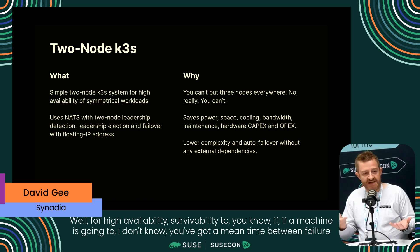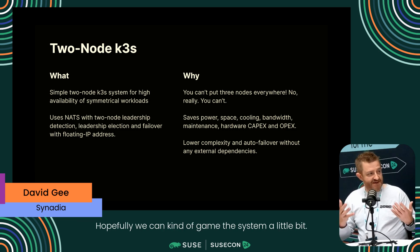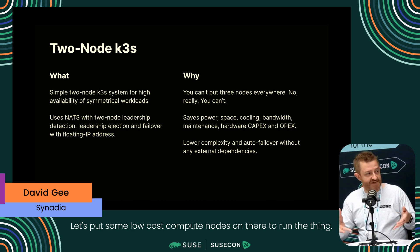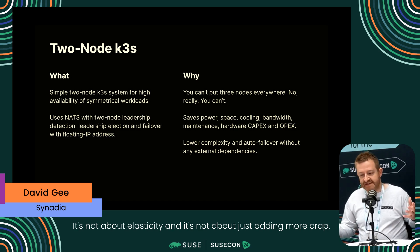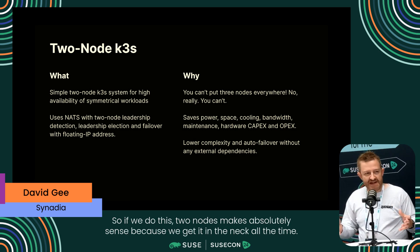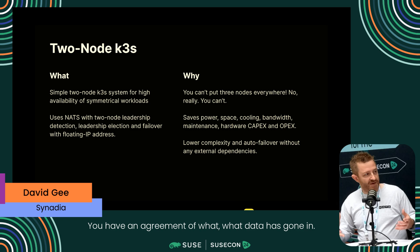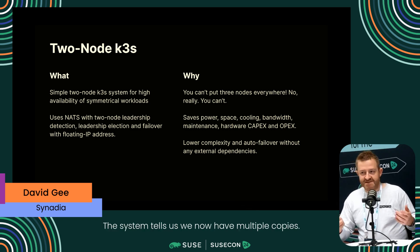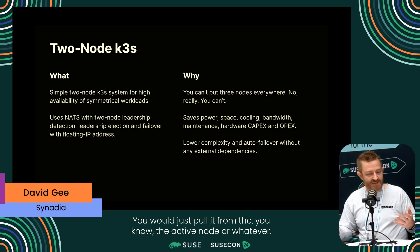Why would you have a two-node K3S system? Well, for high availability and survivability. If a machine has a mean time between failure of two or three years and you've got two machines, hopefully we can game the system a little bit. The hardware might be good for five years - put some low-cost compute nodes on there and swap them out without any interruption to service. It's not about elasticity or just adding more nodes. It's about survivability and continuous maintenance. We get it in the neck all the time about CAP theorem, quorum, and 'you can't do that.' But even when you have quorum, a lot of engineers don't lean into it - they just get an agreement that data has gone in, but don't check it on retrieval.